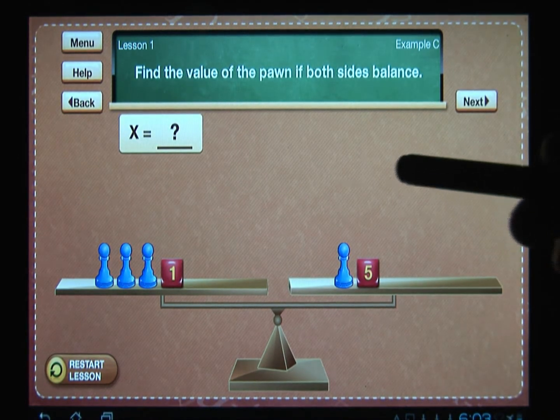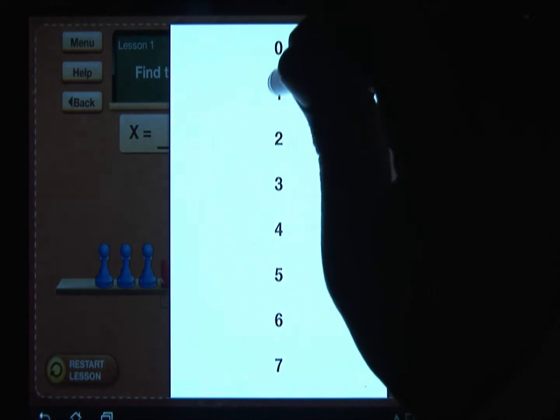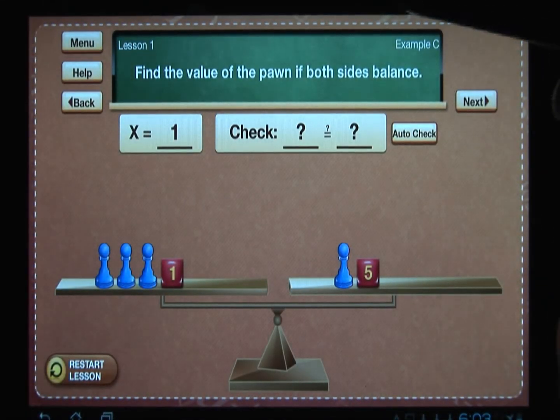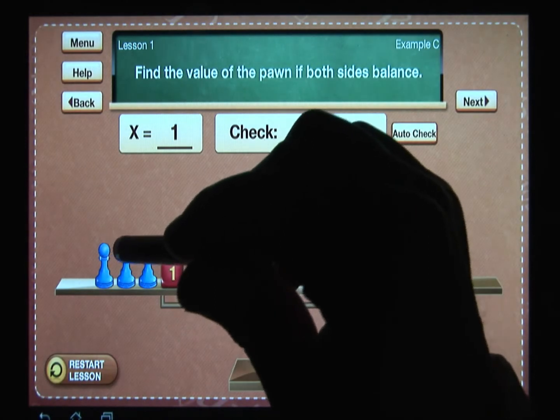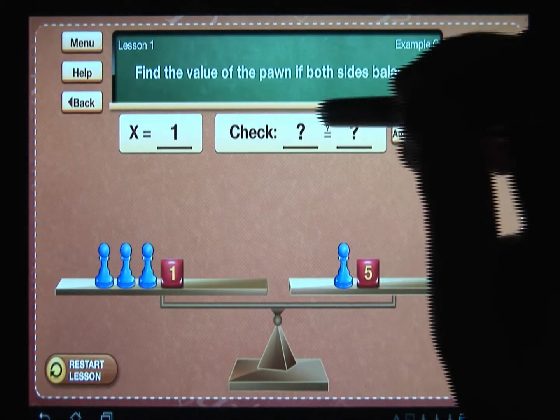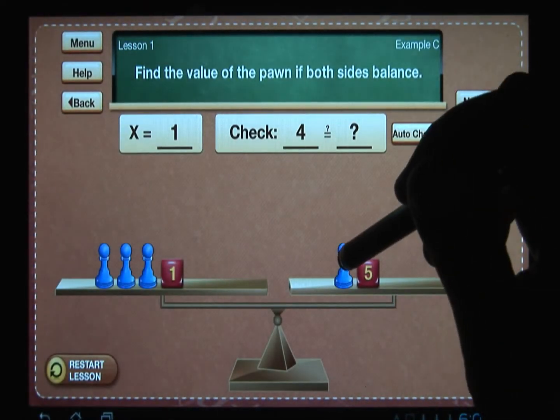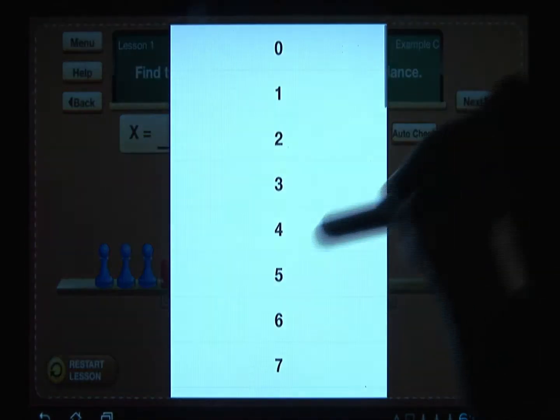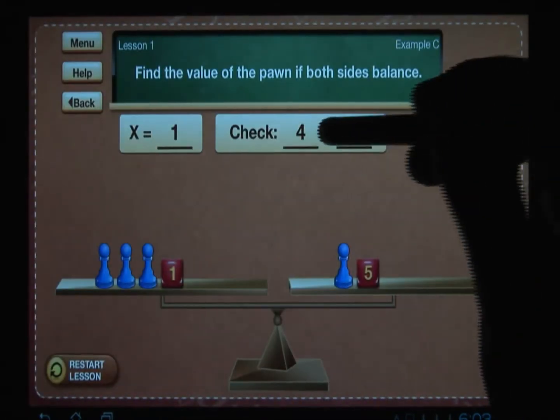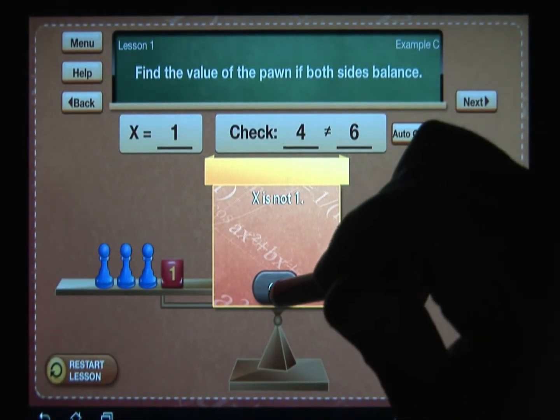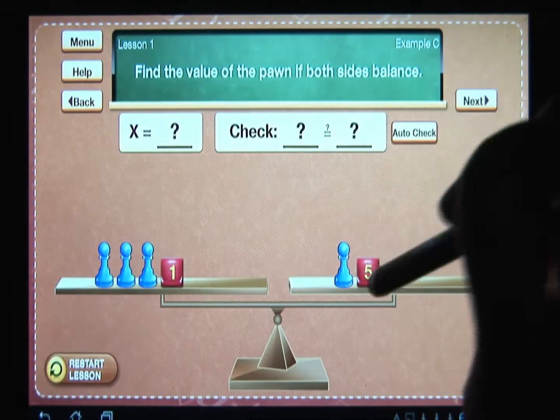So what we want to do is find a value that makes both sides balance. Let's just try the value of one. If the pawn has a value of one, let's see what happens: one and one is two, and one is three, and one is four. The left side is four. And on the right side if x is one, I have one and five which is six. So four does not equal six and I'm told that x is not one.